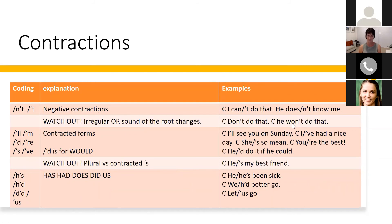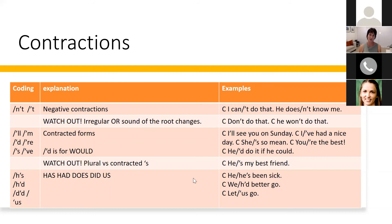For contractions: 'I'll see you on Sunday,' 'I've had a nice day,' 'she's so mean,' 'you're the best,' 'he'd do it if he could' — that last one is for 'would.' Be careful to add the apostrophe — without it, SALT thinks the -s is a plural. And then 'he's been sick' — 'we'd better go' — and 'let's go.' Again, if you're not interested in capturing contractions, just transcribe as full words — that's fine. But during those early stages with children with developmental language disorder, these are the kinds of things that matter, and if we want to monitor progress after intervention, it's really nice to capture those skills.